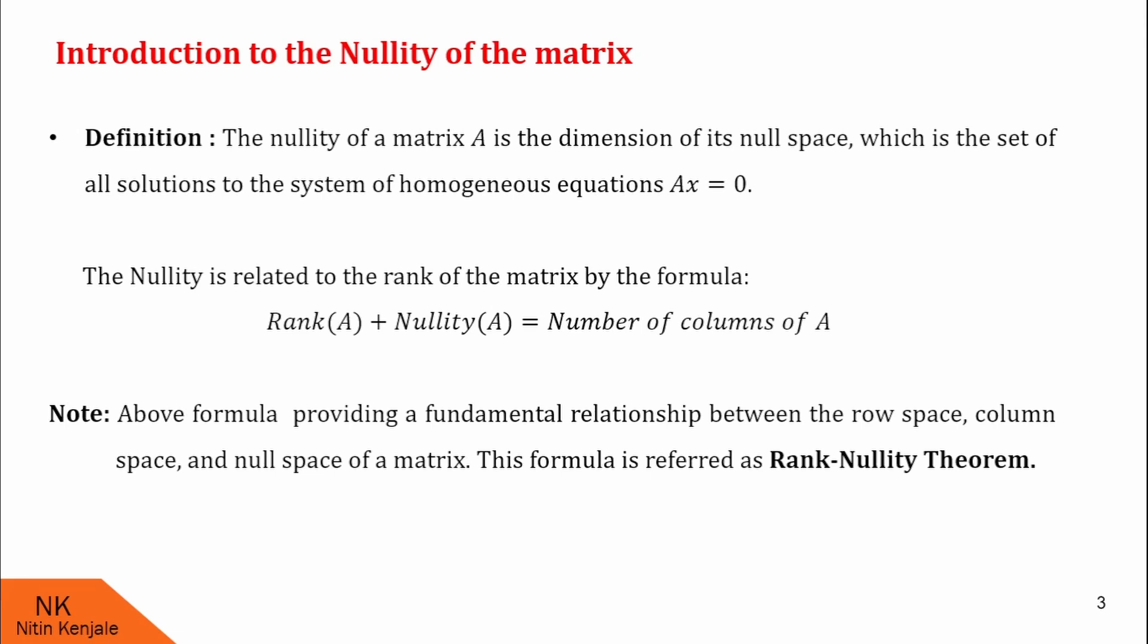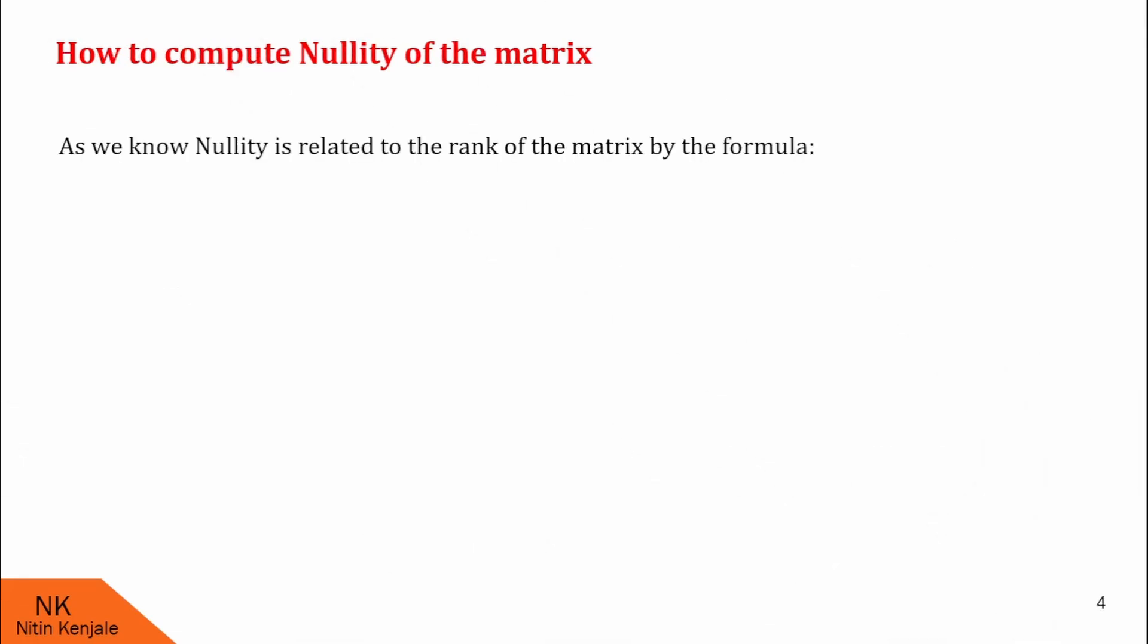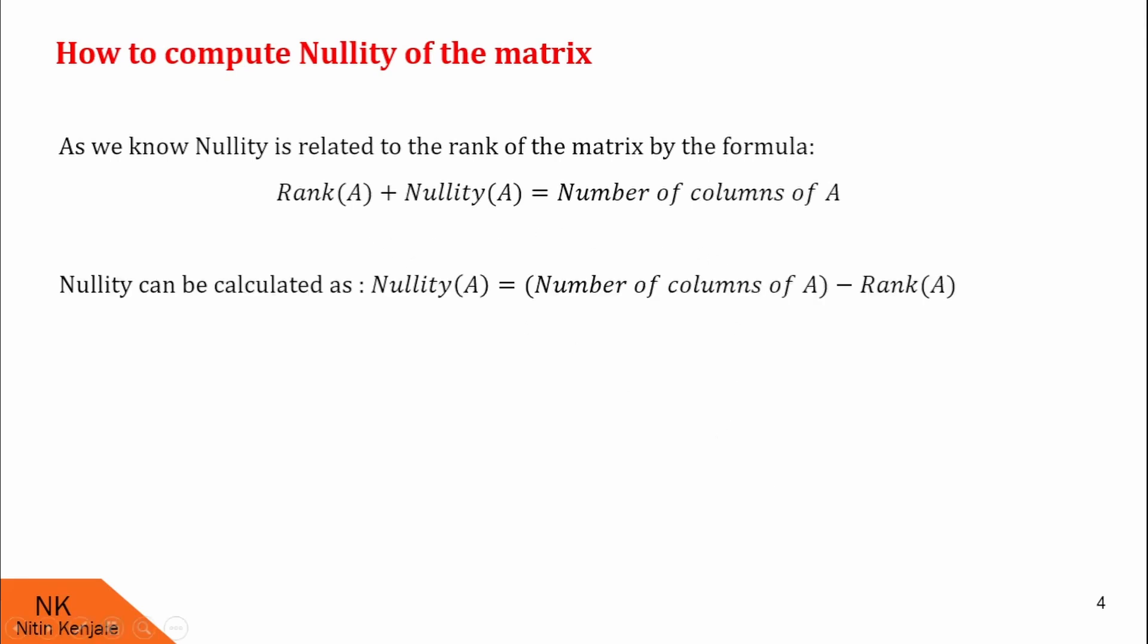Now, let us see how to find nullity of the matrix. As we know, nullity is related to the rank of the matrix by the formula rank of A plus nullity of A is equal to number of columns. Therefore, nullity of the matrix can be calculated as nullity of matrix A is equal to number of columns of A minus rank of A.